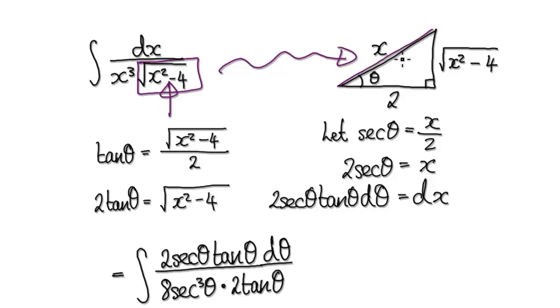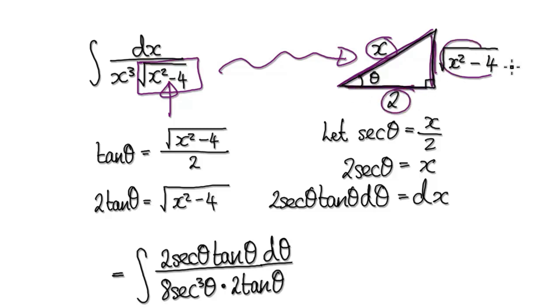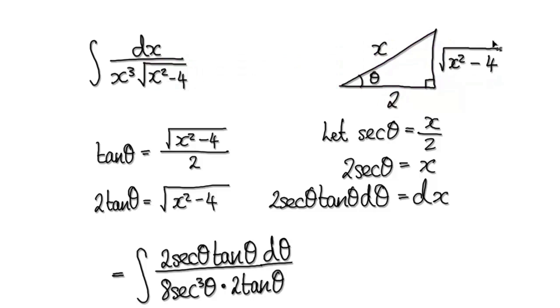Make the hypotenuse to be x, make the adjacent to be 2, then the opposite will have no choice but to be this. So now notice that this matches up with this — we can extract this later on.